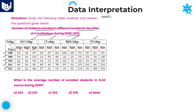Once you understand this information clearly, problem solving related to any kind of tabular data interpretation is very simple. Let's look at the first question: what is the average number of enrolled students in BED course during the year 2009? Here you need to check the course BED in the year 2009.